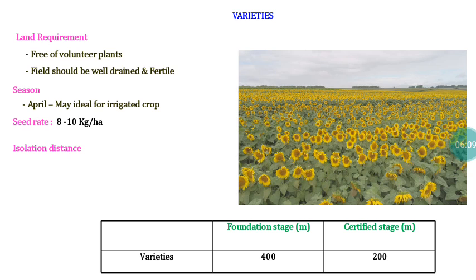The land should have well-drainage facilities and fertile soil. The ideal season for seed production is April–May for irrigated crop, because the flowering period should not coincide with rain. Due to self-incompatibility, pollen cannot fertilize the same flower, and rain will wash out pollen — making it unavailable for nearby plants too, seriously reducing seed set. Similarly, maturity should not occur during rain, as sunflower seeds are exposed at the terminal part of the plant and are the first to receive rainfall.